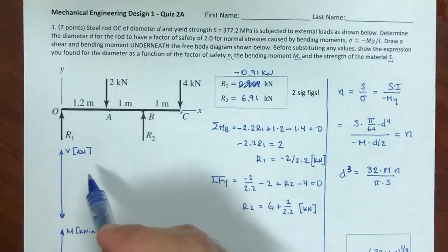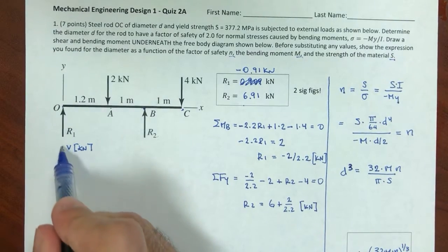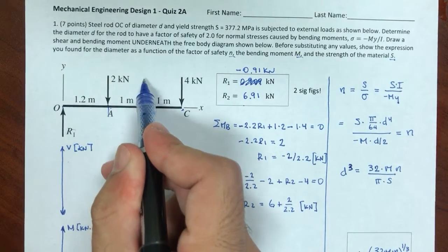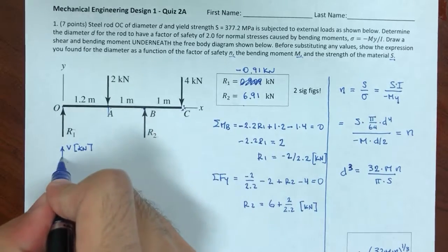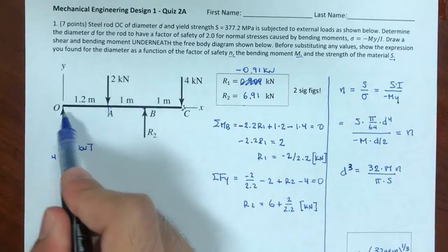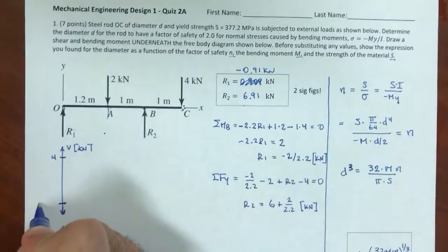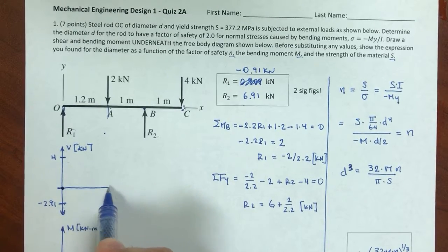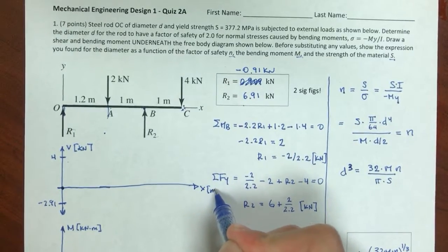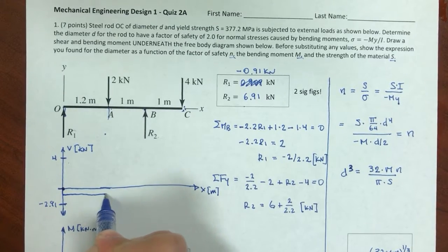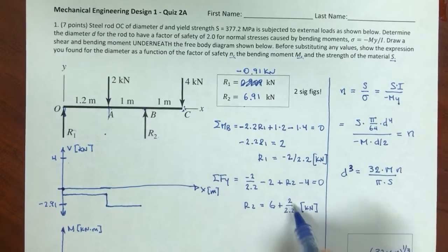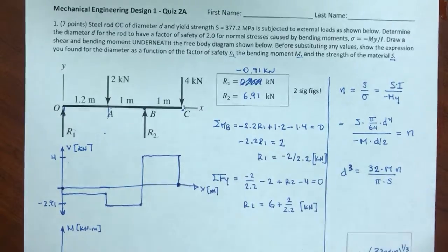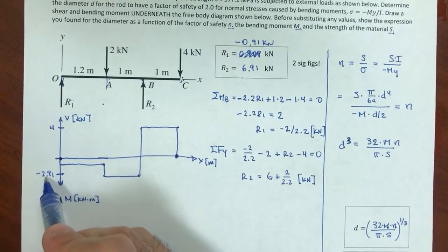For the shear diagram: R1 is negative so it goes down 0.91 kN at O, then down another 2 kN at A, then up 6.91 kN at B, and down 4 kN at C reaching zero. The maximum shear magnitude I care about is 4 kN near C, and about 2.91 kN between O and B. These values set up the shear curve shape.